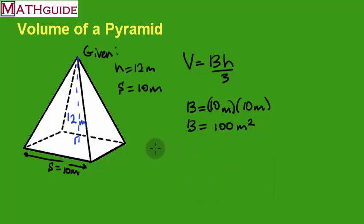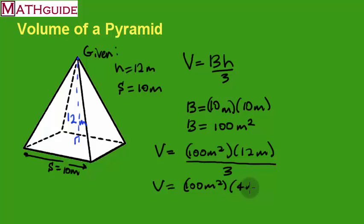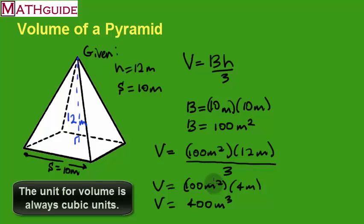Now we can calculate the volume by taking the area of the base — 100 meters squared — times the height. The height of the pyramid is 12 meters, and we're going to divide by 3 because that's what the formula tells us to do. I know that 3 goes into 12 four times, so this is like taking 100 meters squared times 4 meters. Our volume is going to be 400 meters cubed, because meters cubed is the result of taking meters squared times meters.